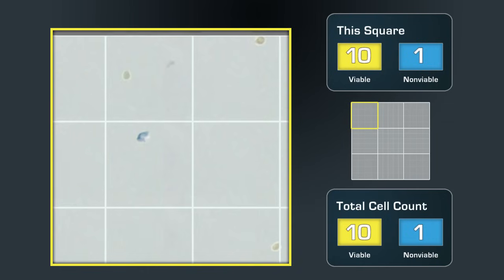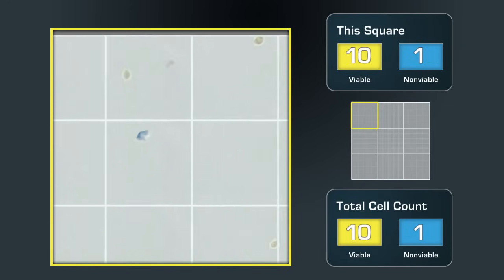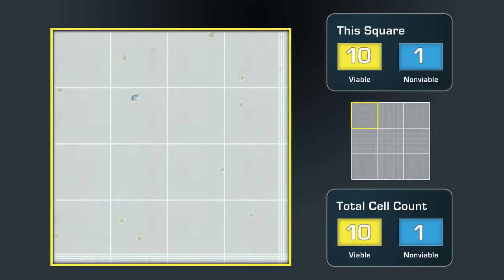Occasionally you will see artifacts, objects or debris that appear blurry and don't have a well-defined shape. This is an example of an artifact. We won't include it in our count. Proper storage, cleaning and handling of the hemocytometer will minimize the number of artifacts.